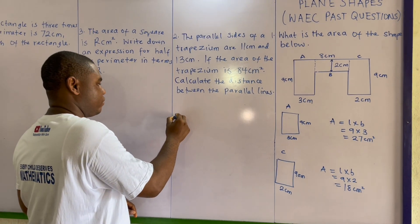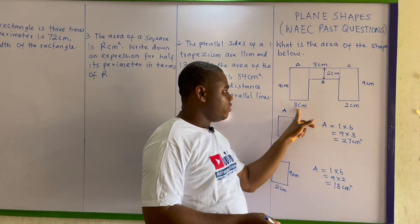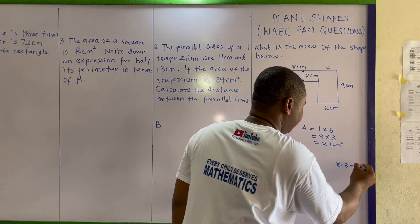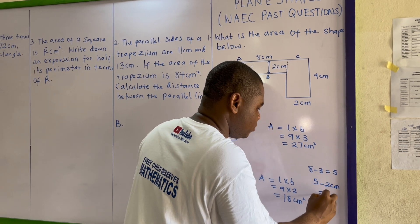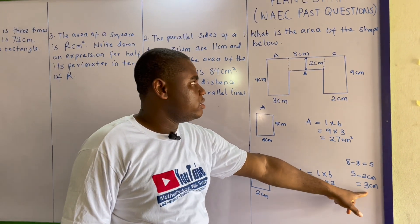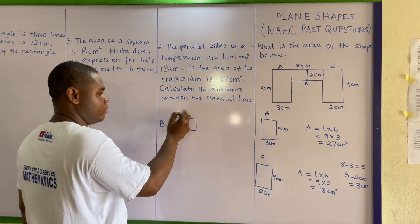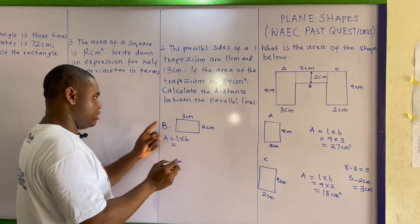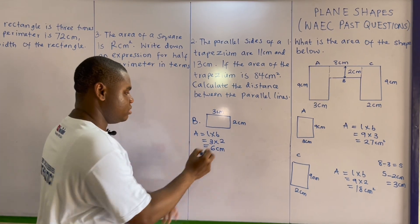For the final shape B: from the first figure, three centimeters have been taken out, so eight minus three gives five. Also two centimeters have been taken out, so five minus two gives three centimeters. The length of B is three centimeters and the breadth is two centimeters, giving an area of three times two equals six centimeters squared.